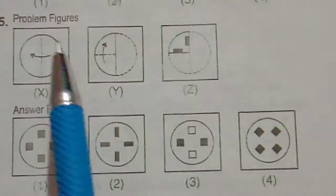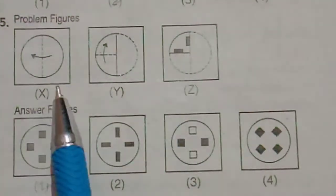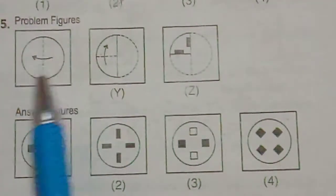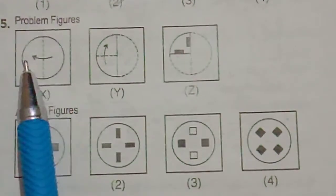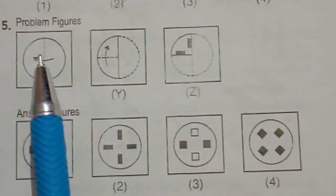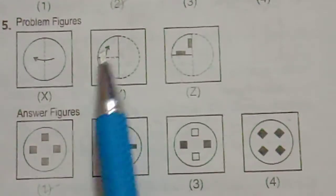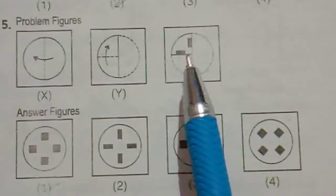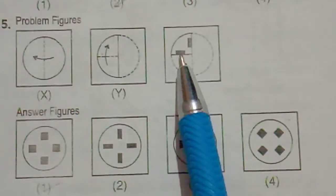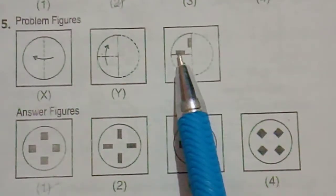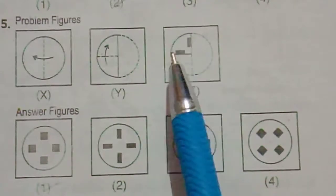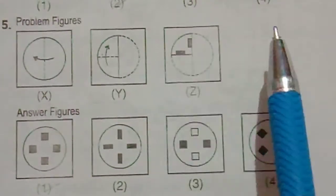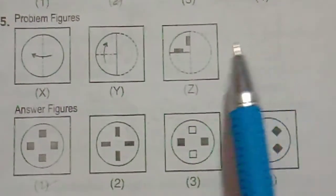Let's see one problem figure. In this problem figure, this is the first folding, and this is the second folding. After the second folding, if we cut here — this one and this one — we have two parts of cutting here. So what will be the answer?